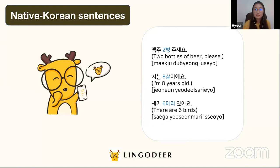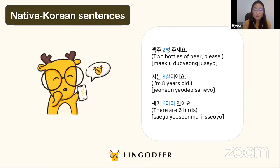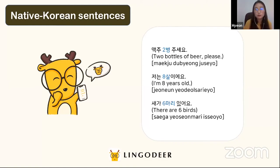Let's see some example sentences. If you go to Korea and go to a restaurant, you can say: 맥주 두 병 주세요 — Two bottles of beer, please. 맥주 is beer, 두 병 is two bottles, and 주세요 means please give me. Since we are counting items, we use Native Korean number 두.